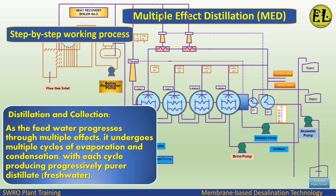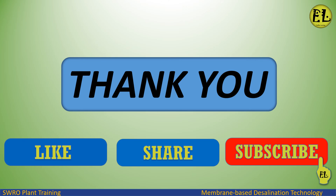Distillation and Collection: As the feed water progresses through multiple effects, it undergoes multiple cycles of evaporation and condensation, with each cycle producing progressively purer distillate — fresh water. Thank you for watching this video.